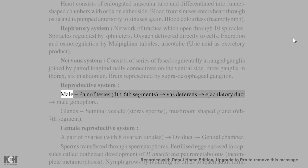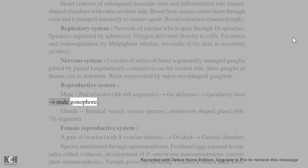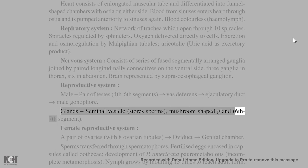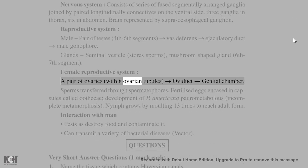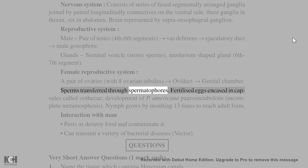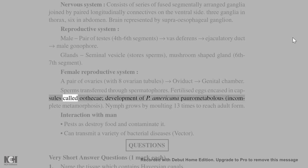Male reproductive system: a pair of testes in the fourth to sixth segments, vas deferens, ejaculatory duct, and male gonophore. Seminal vesicles store sperms; mushroom-shaped gland in the sixth to seventh segment. Female reproductive system: a pair of ovaries with eight ovarian tubules, oviduct, and genital chamber. Sperms are transferred through spermatophores; fertilized eggs are encased in capsules called oothecae. Development of P. americana is paurometabolous — incomplete metamorphosis.